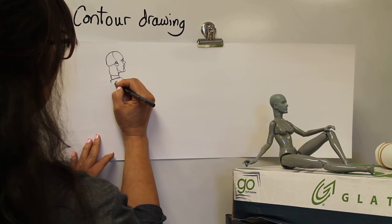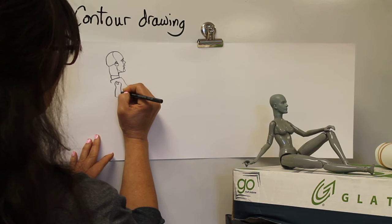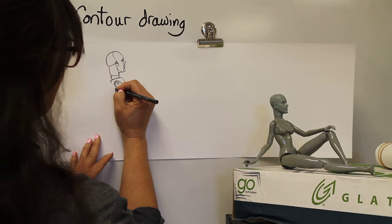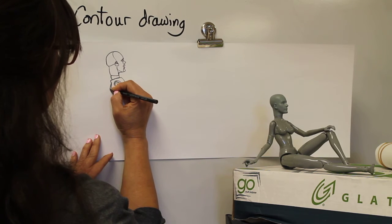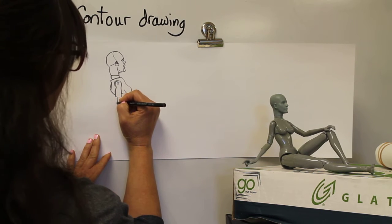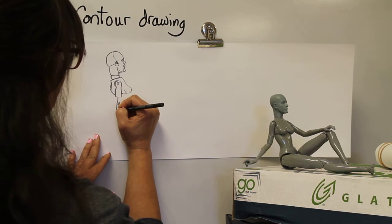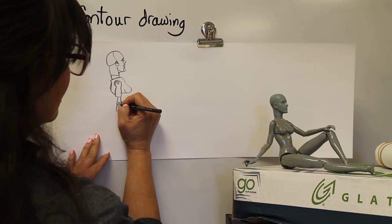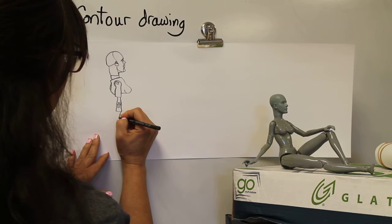Trying to really perceive the angles, the curves, the shapes. I'll do a shoulder blade while I'm there. Trying to keep my pencil. My goal is to kind of keep my pencil on the paper.